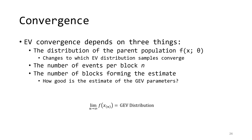Our sample maxima converge to the extreme value distributions at varying rates. How quickly and how close our samples get to the GEV distribution depend on three things. First, it depends on what the parent population looks like. Second, the rate depends on how many events are in each block — think of this as the number of chances we get to draw our maximum value. In a dry climate there may be only a couple of significant flows per year, while in a humid climate there may be many local maxima to draw our block maximum from. Finally, convergence depends on our sample size.